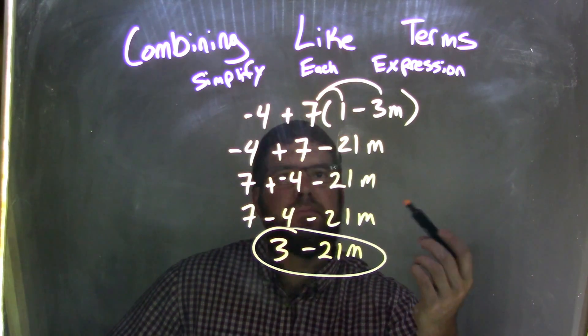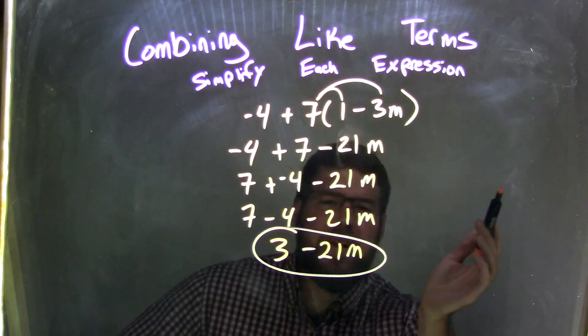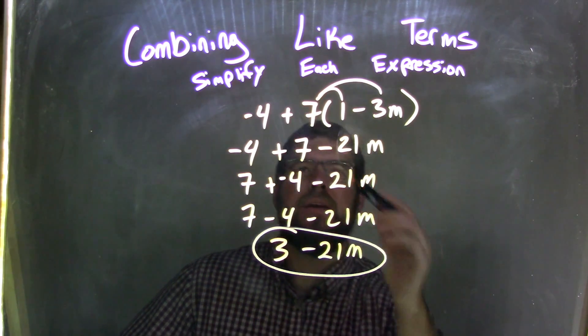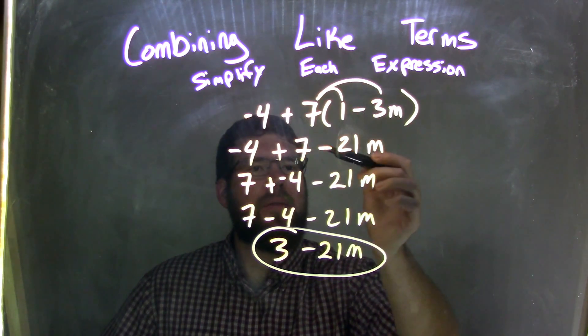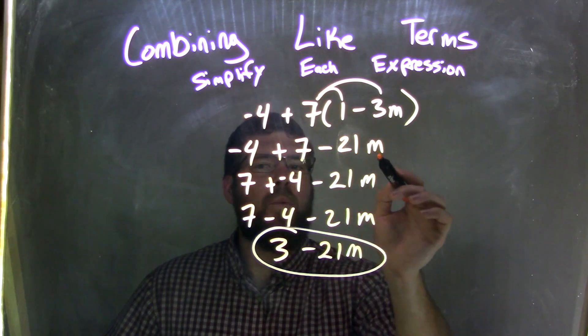So let's recap. That's all 7 times the parentheses, 1 minus 3m. I could not do anything inside the parentheses first. So that's why my next step would then be to distribute the 7. So 7 times 1 is 7. 7 times 3 is 21. Brought on the subtraction. So now we have negative 4 plus 7 minus 21m.